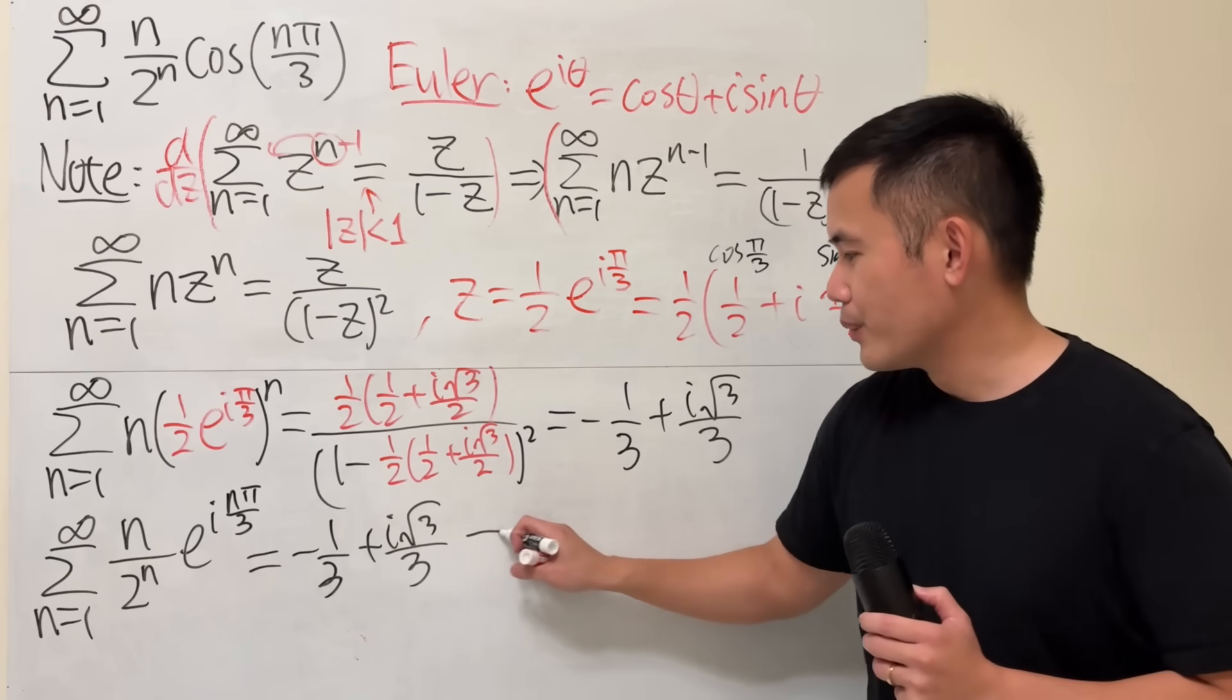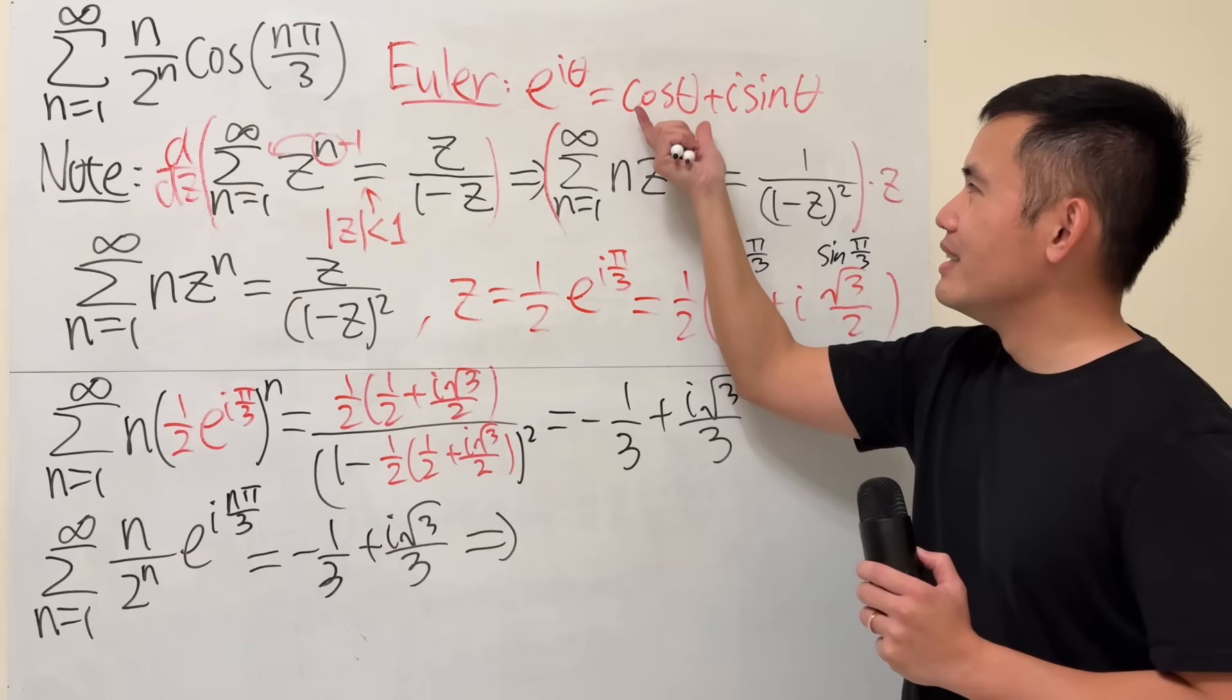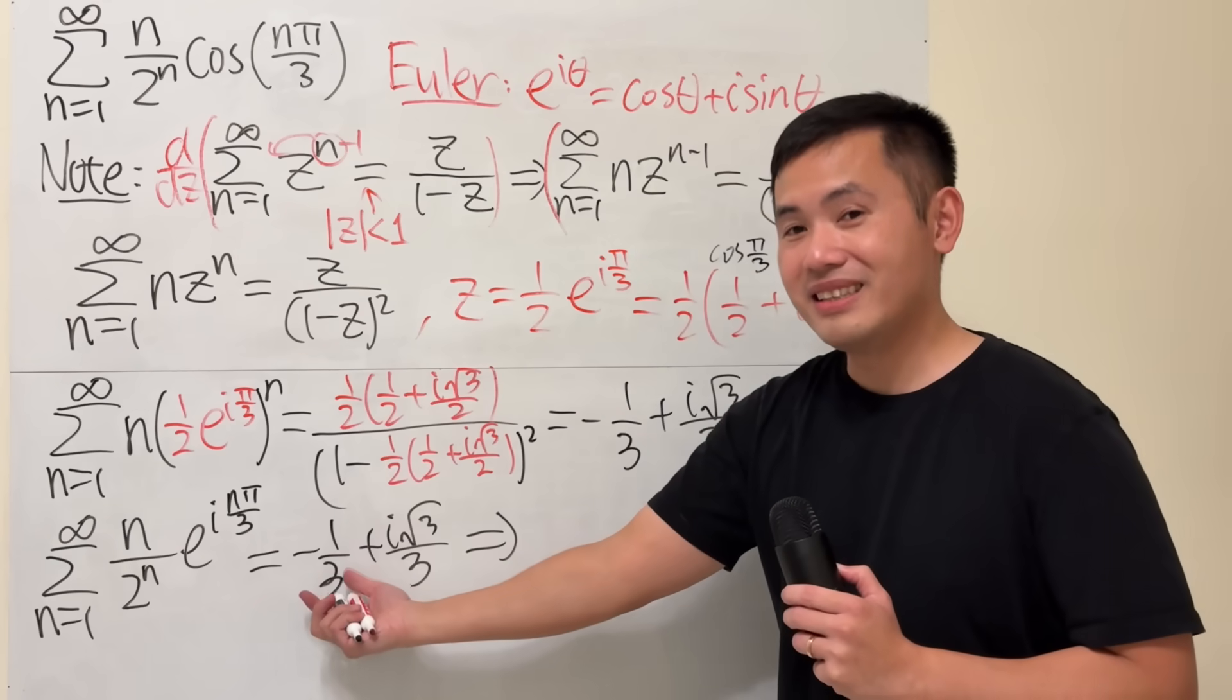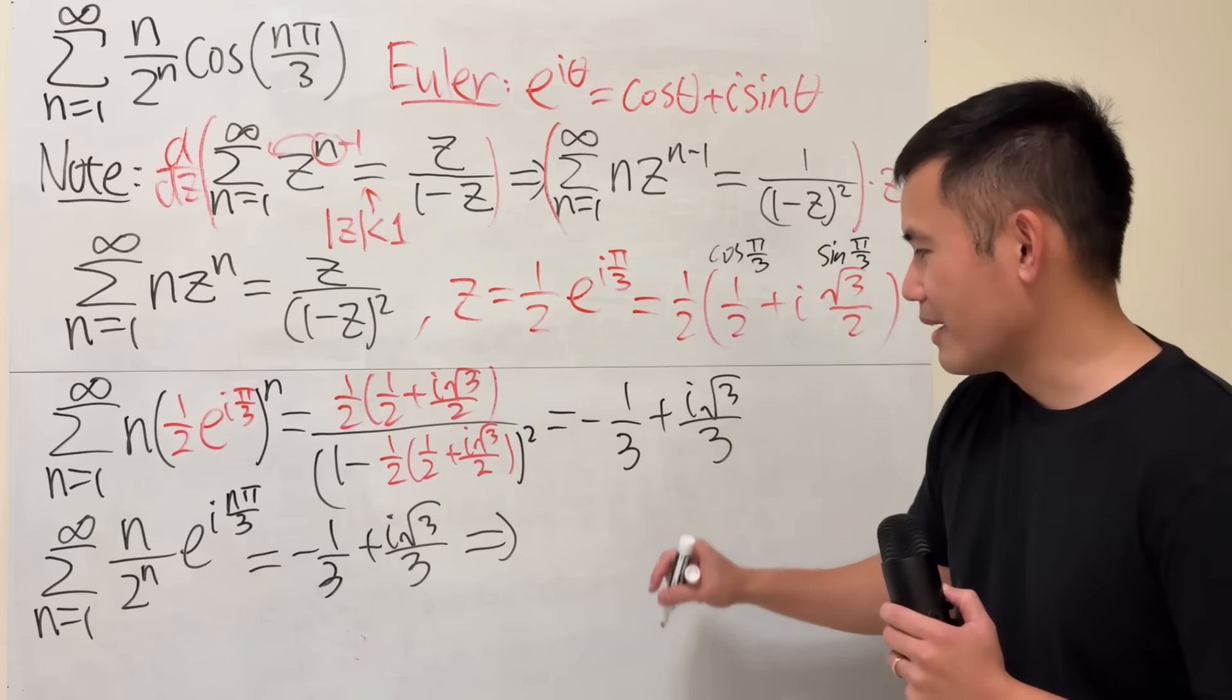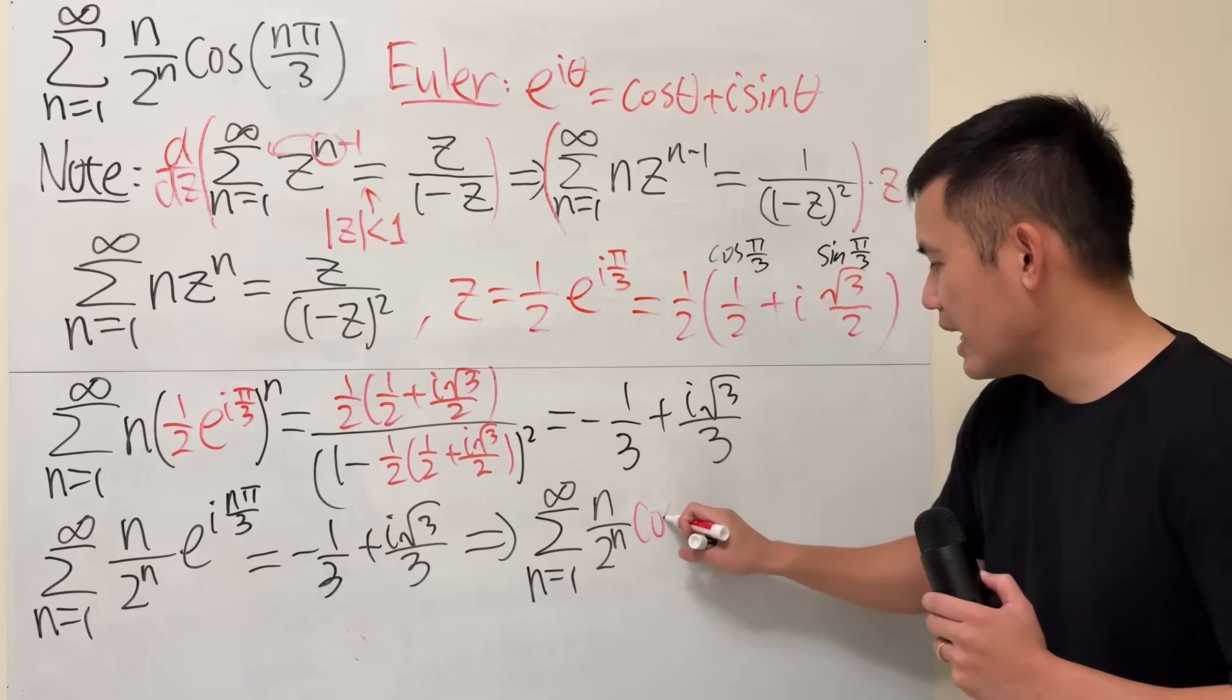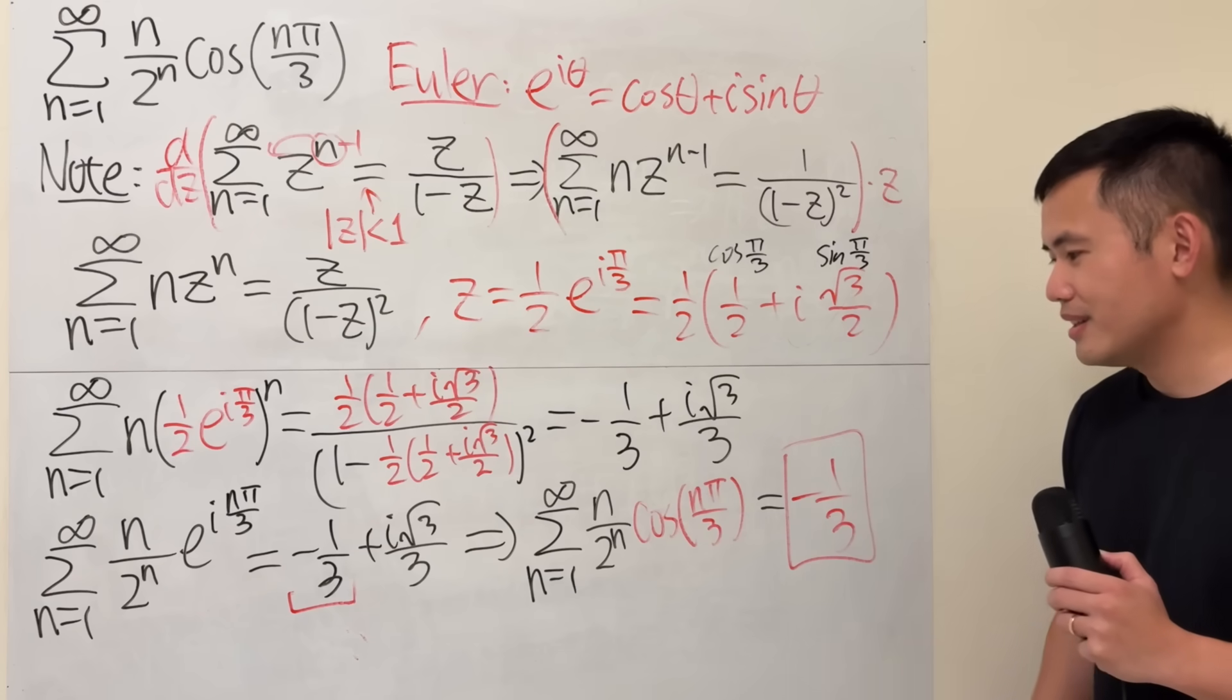But what does that tell us? This is the real part of the result. And the real part of this is precisely the one with the cosine. If you have the cosine of n pi over 3, times n over 2 to the n, we know that summation must be negative 1 over 3. Likewise, you can also do it with sine, but I will leave that to you. This tells us that the summation as n going from 1 to infinity, n over 2 to the n cosine of n pi over 3, is the real part, which is negative 1 third. That is the answer.